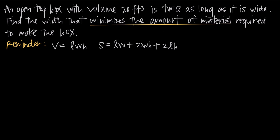Once we identify what function we need — surface area — our next step is always to get that function in terms of one variable only. Right now it's in terms of three variables. Going back to the problem, we've been told the box is twice as long as it is wide. In other words, the length is two times the width, so l = 2w.